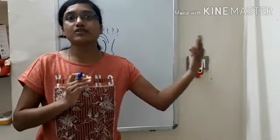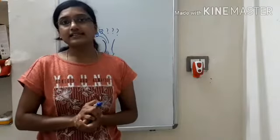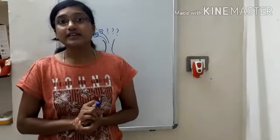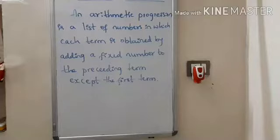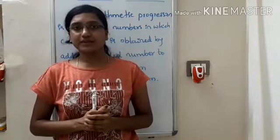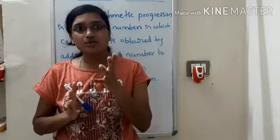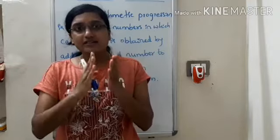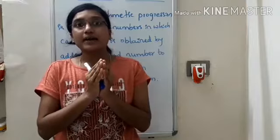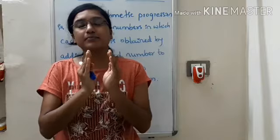So today we will discuss: based upon the first situation, how to find out the second situation. If we know the position of one object, we can find out the position of the second, third, fourth, etc. That topic is called arithmetic progression.